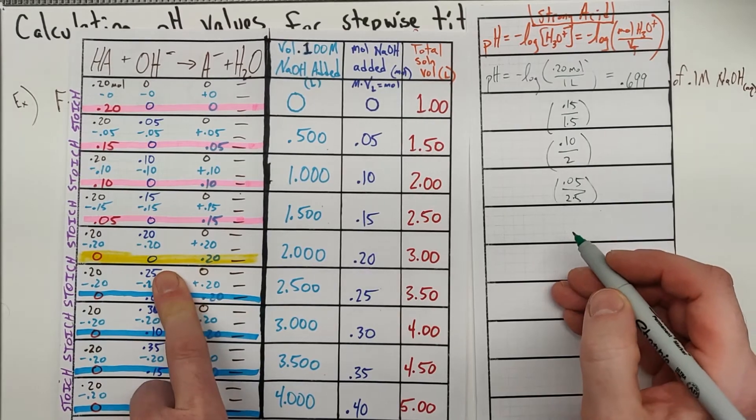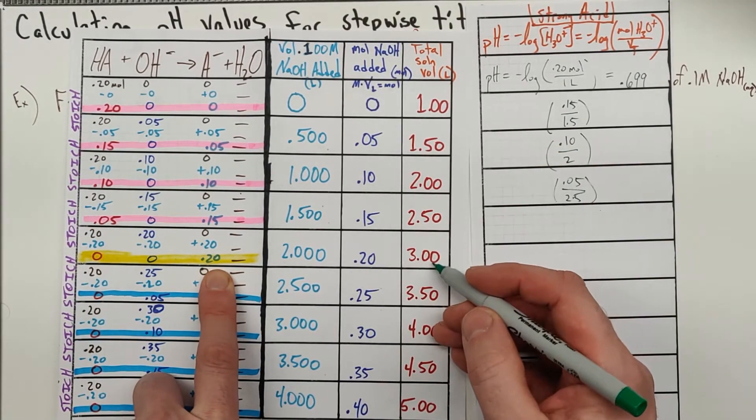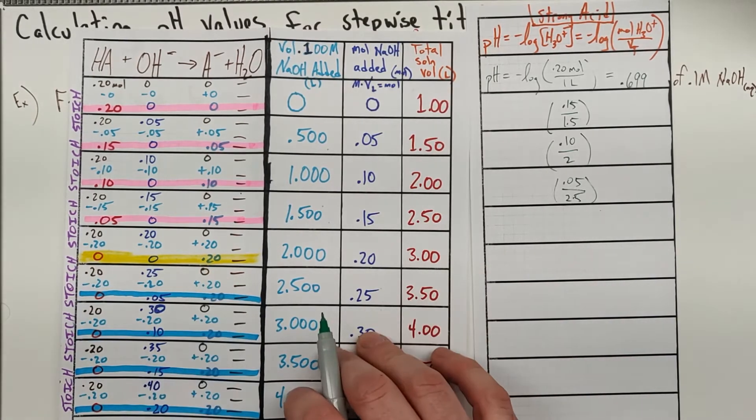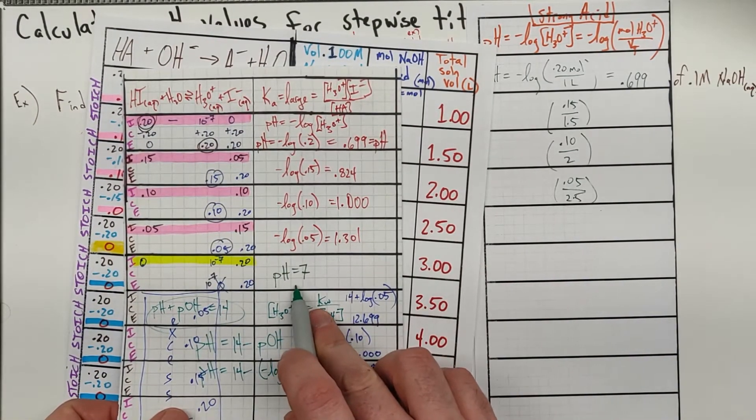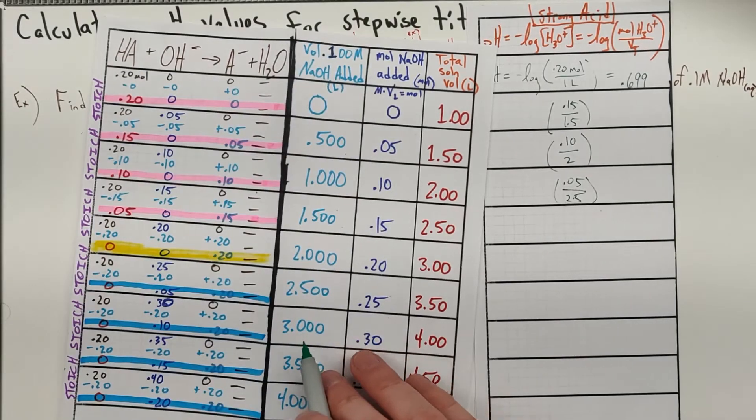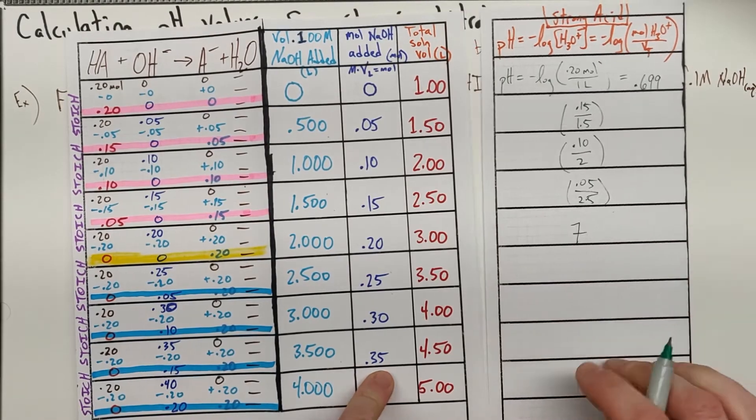And then we get down to here and we've got 0.20 of the A- in 3 liters. And that one actually doesn't matter. If you remember before, with a strong acid, you end up with a pH of 7, a neutral salt is formed when we do that reaction. So we're going to end up with a pH of 7 right there.